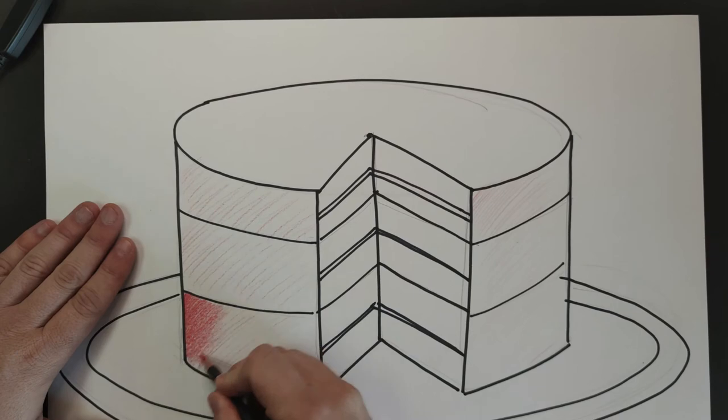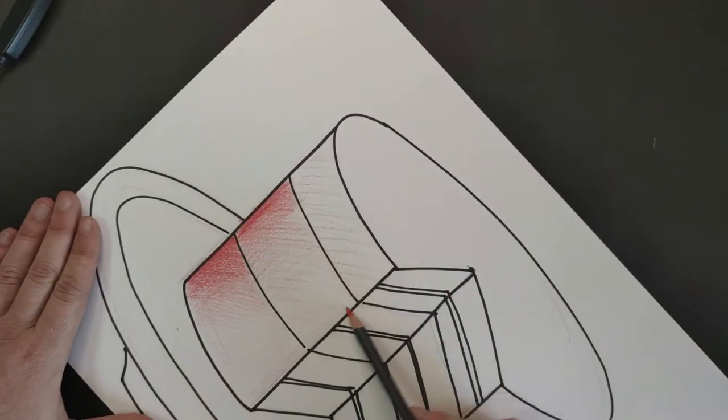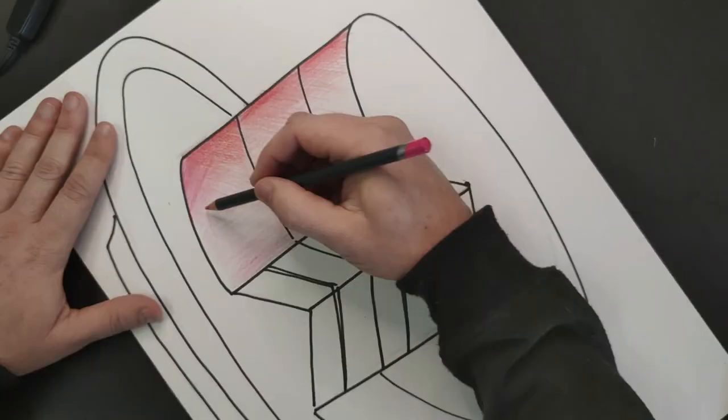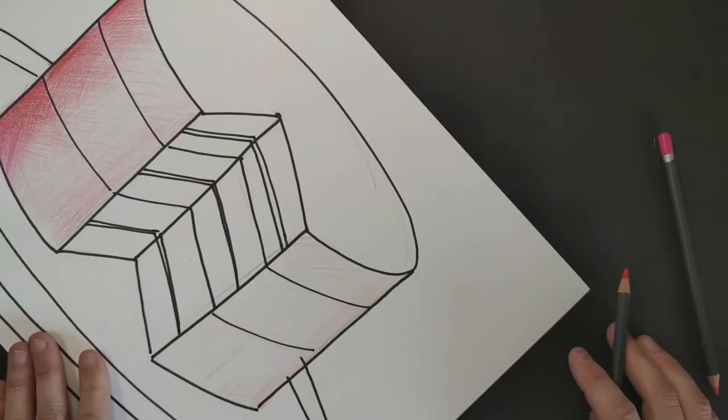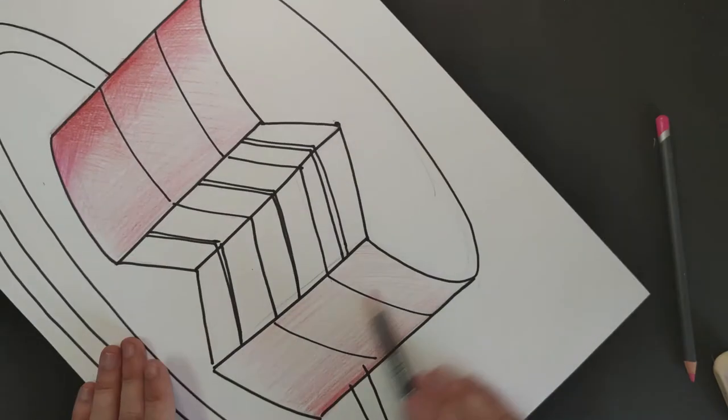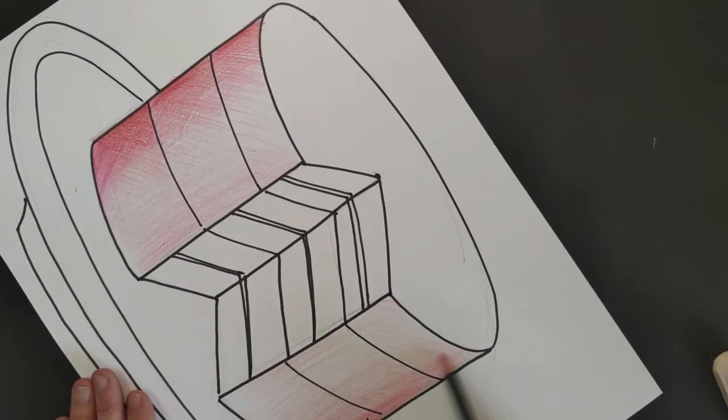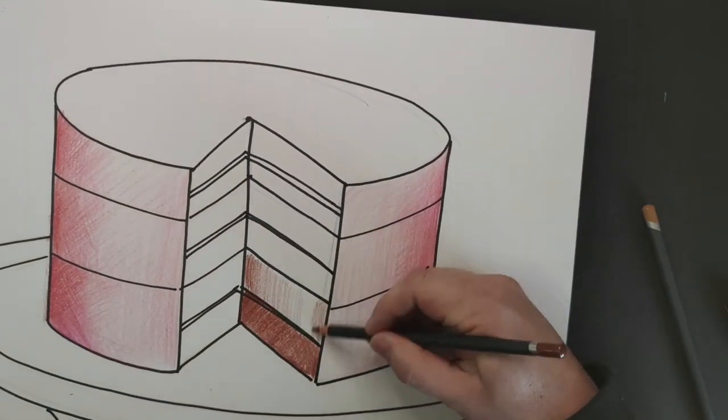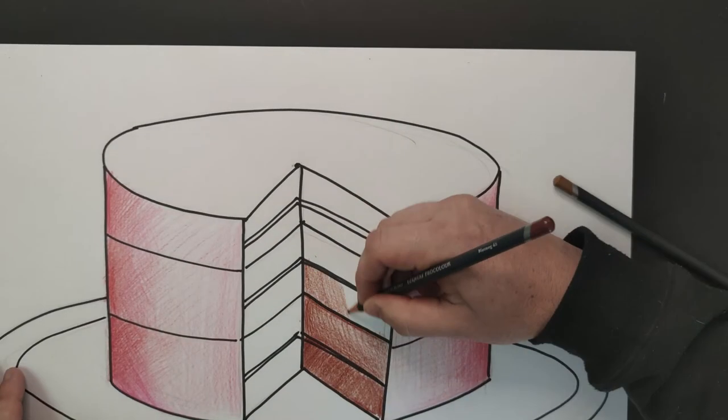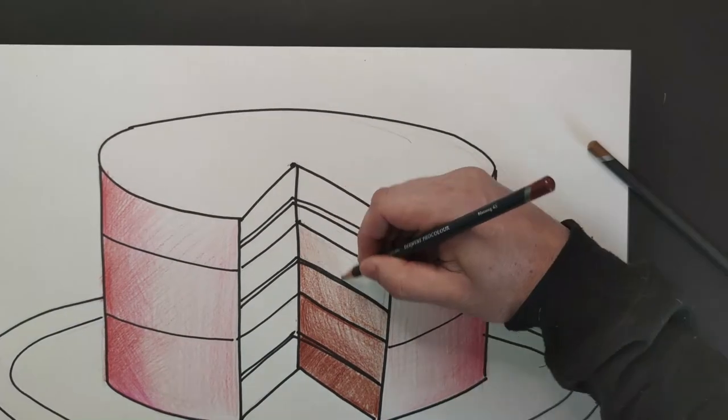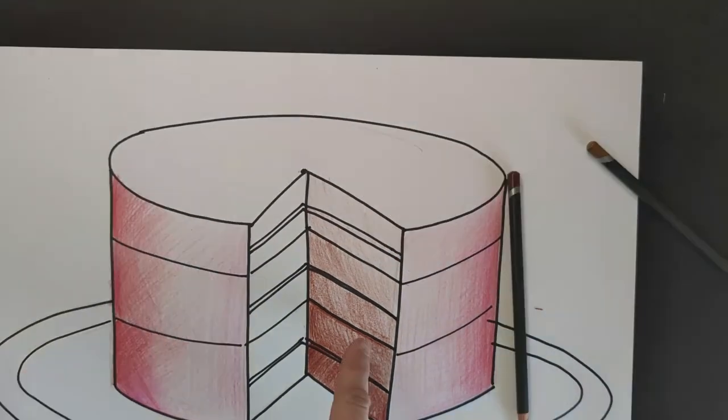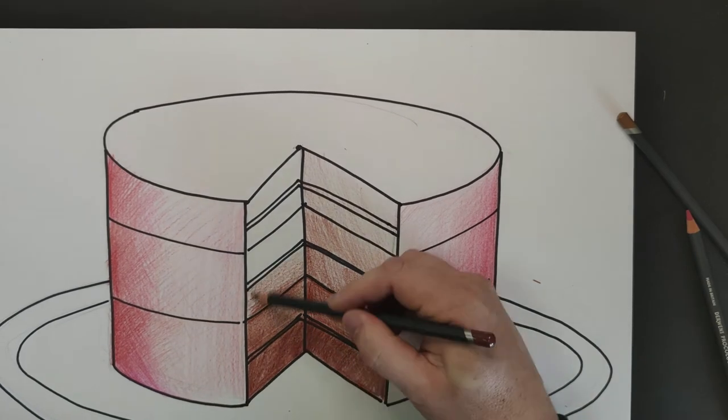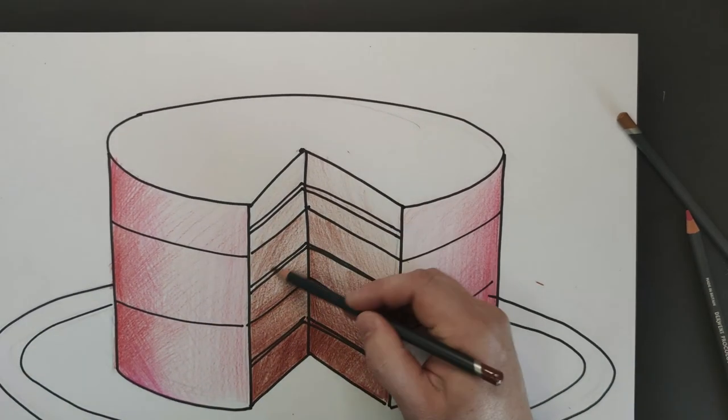Now we can add value or shading to our cake. Value is an element of art. Color the outside of the outer cake darker than the inside of the cake. The inside of my cake is going to be chocolate. I'm going to start with the darkest value at the bottom and work my way up to the lightest value at the top. I'm going to do this by pushing harder on the bottom layers and softer on the top layer.